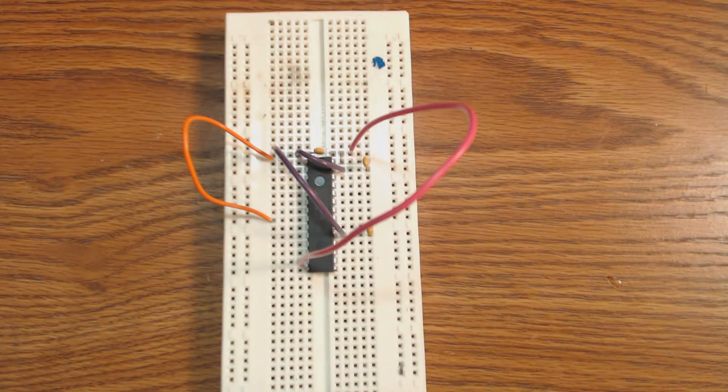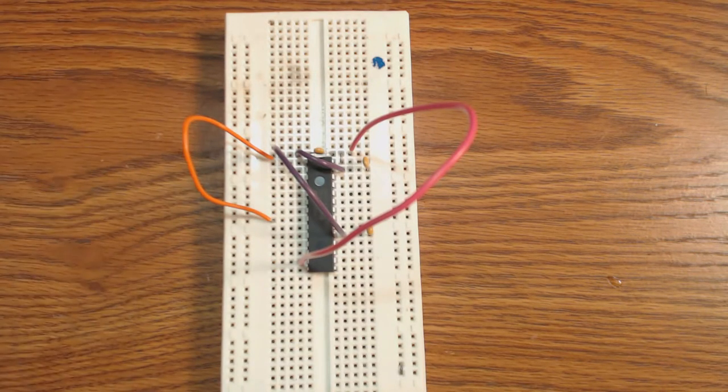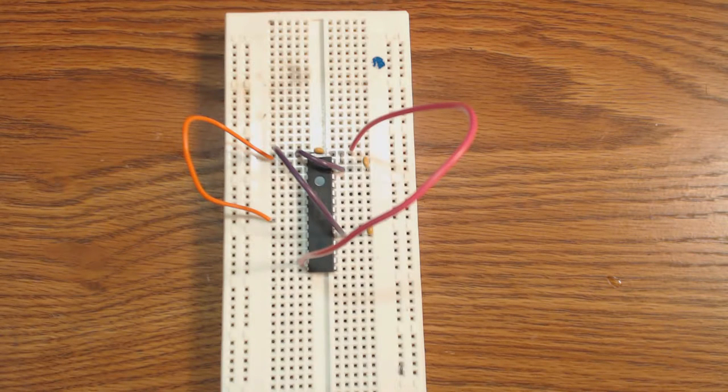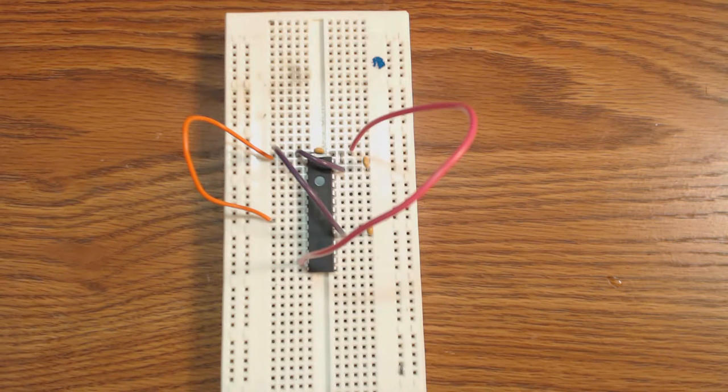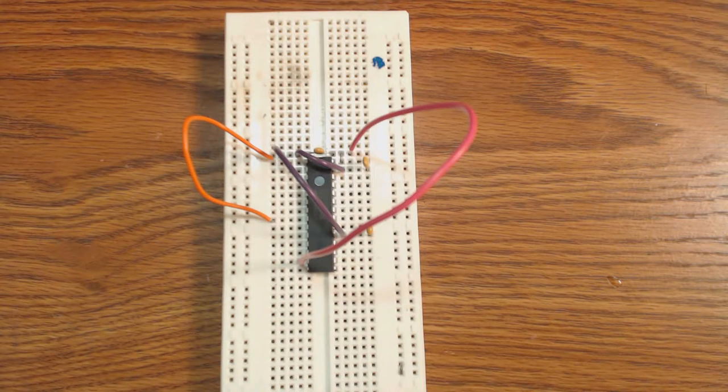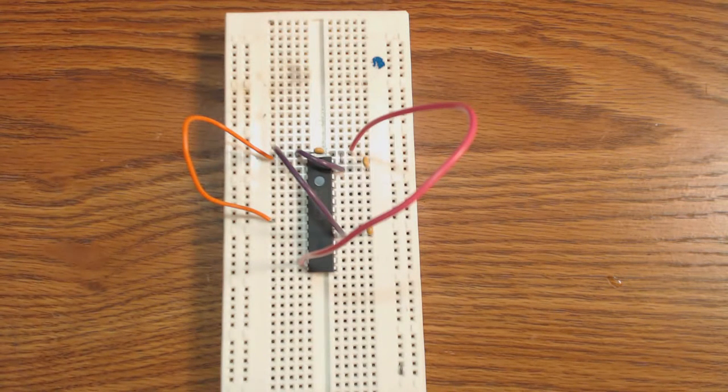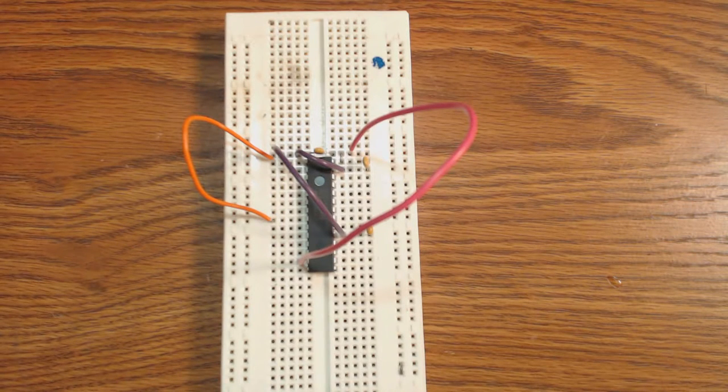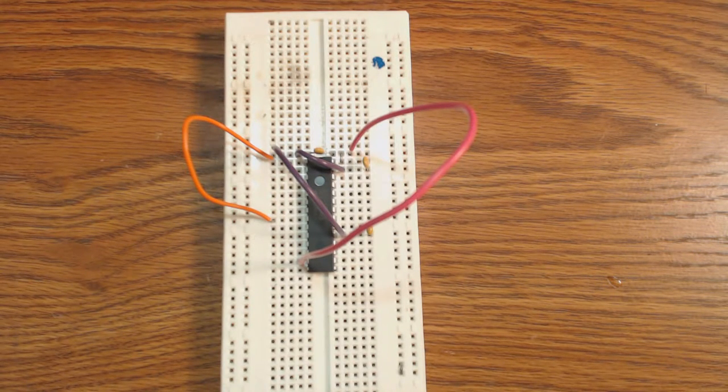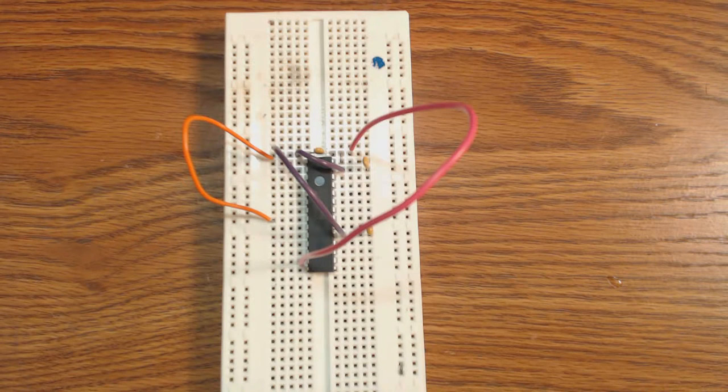So now we need a pull up on MCLR. I'm actually measuring this resistor. Okay so this is a 10k resistor. I need to double check that just for the sake of posterity.